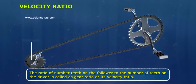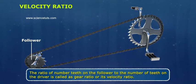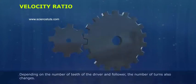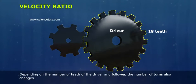The ratio of number of teeth on the follower to the number of teeth on the driver is called as gear ratio or its velocity ratio. Depending on the number of teeth of the driver and follower, the number of turns also changes.